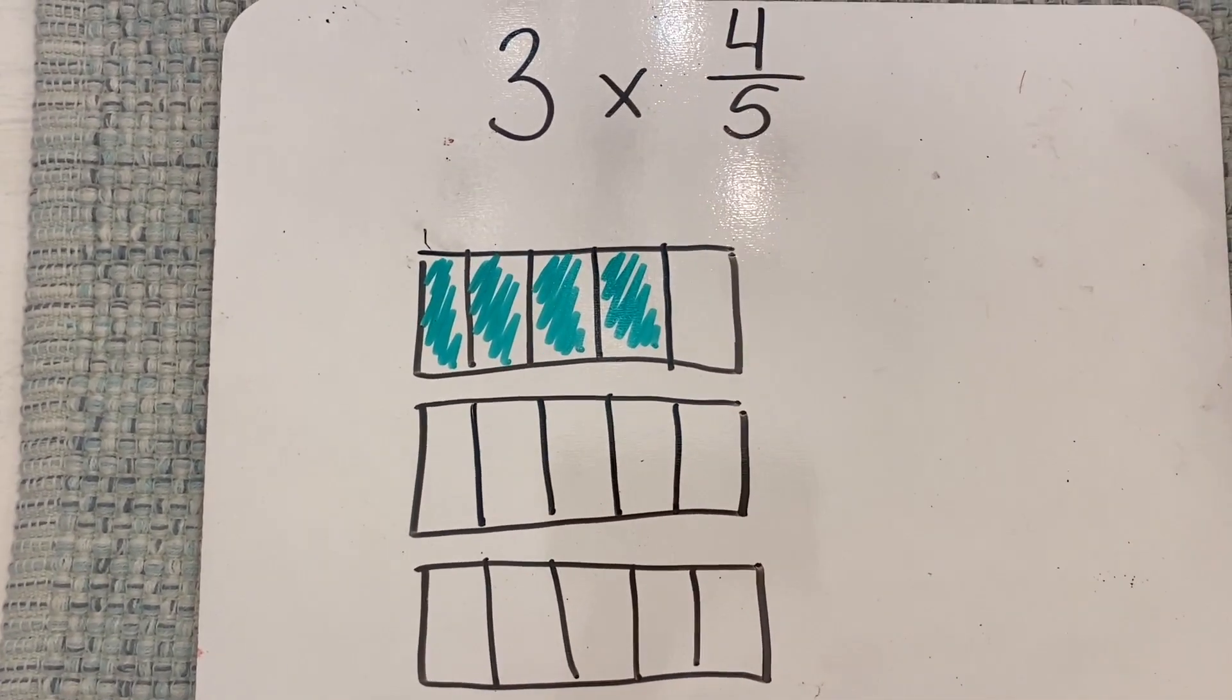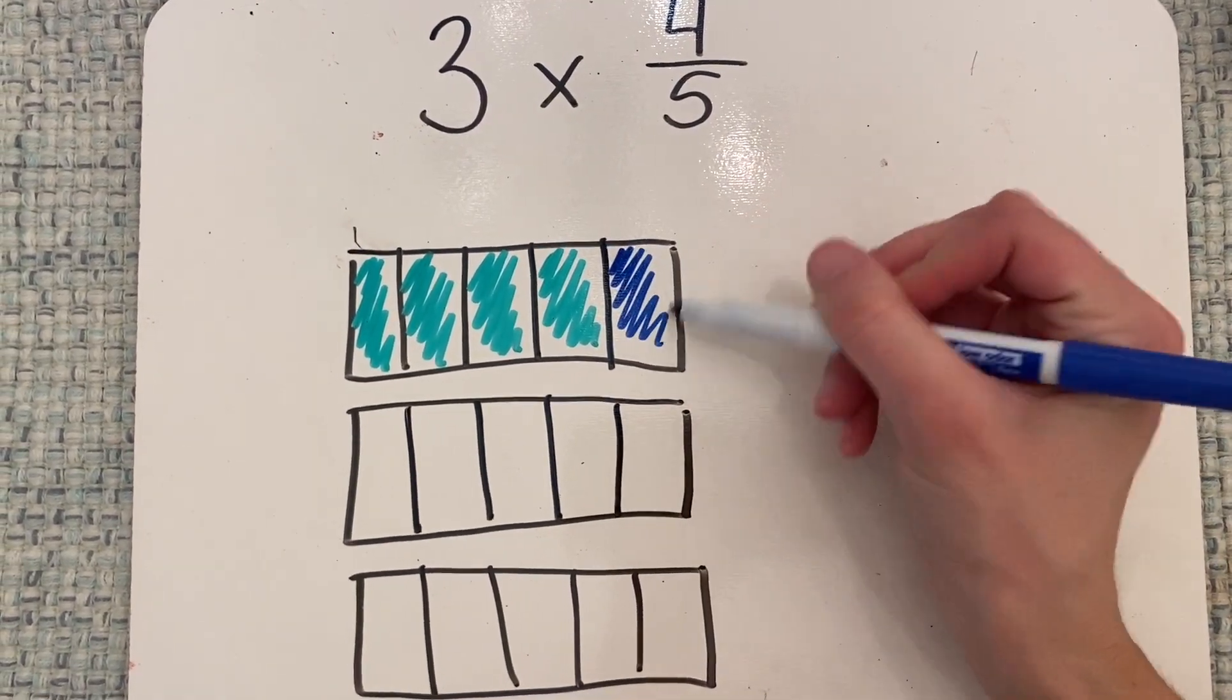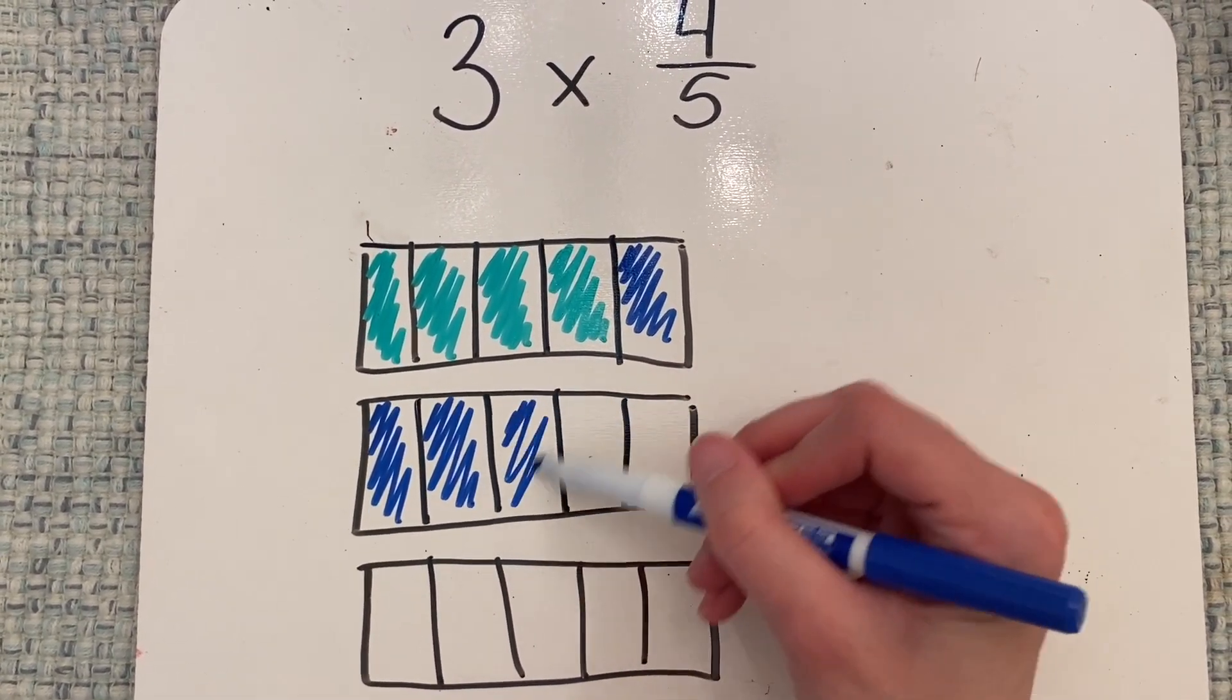Now I want to take a new color so I can tell these apart. I'm going to shade my second group of four-fifths. So that's one piece starting right from where I left off. Two, three, four.